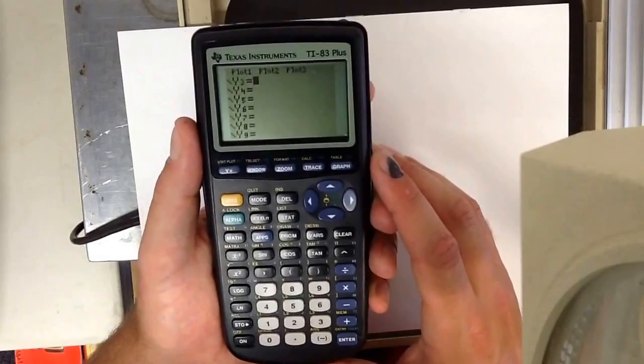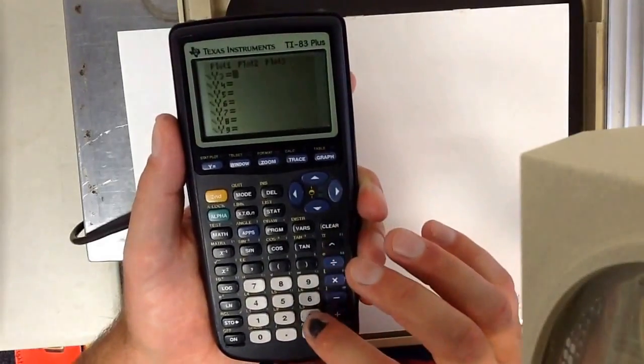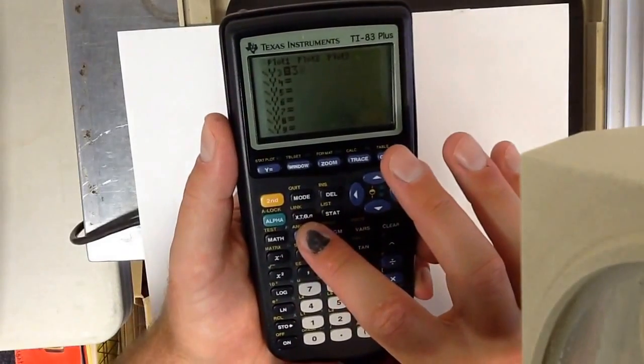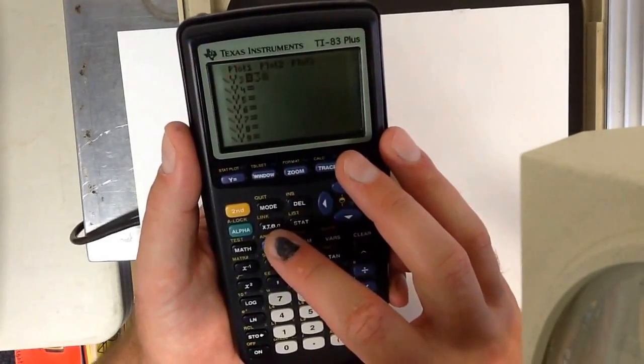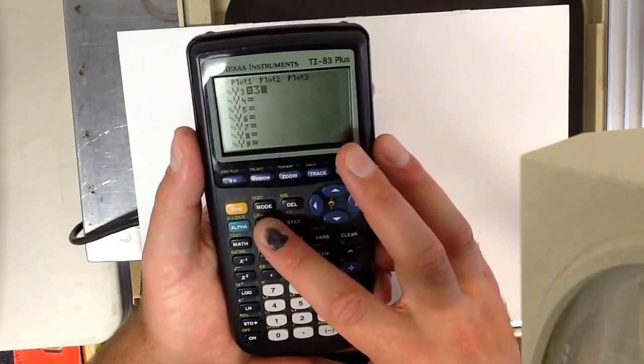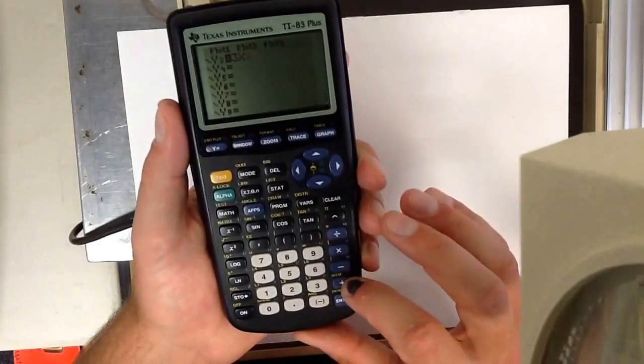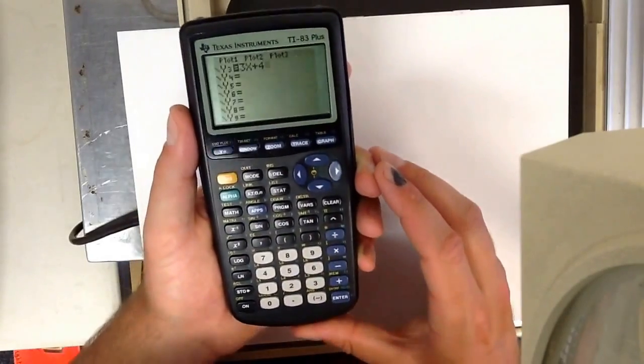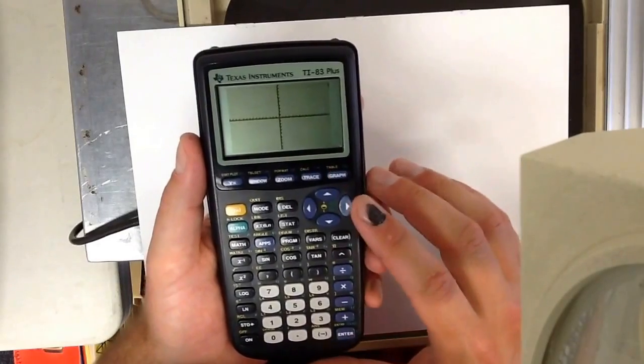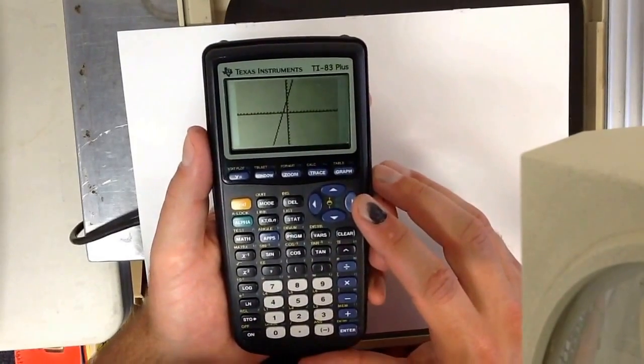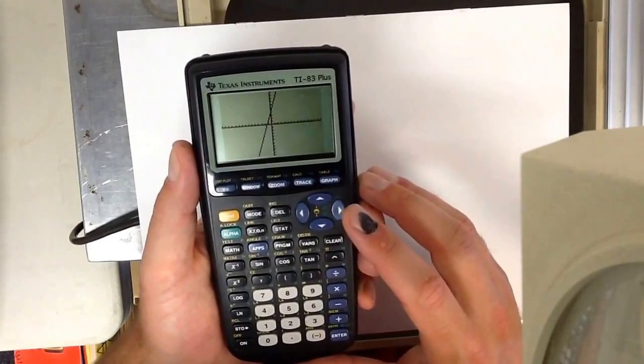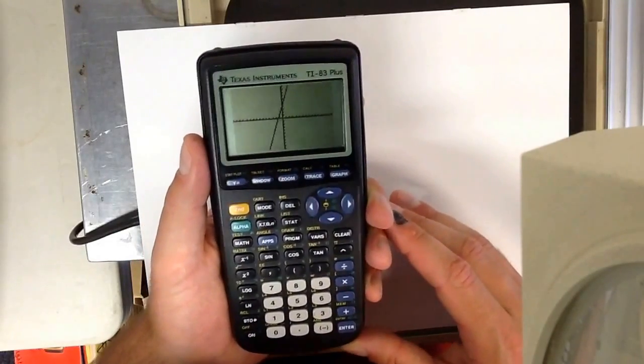Now let's say I wanted to graph y equals 3x plus 4. So I would say 3. Now this button right here, this x comma t comma theta comma n, that is your independent variable and it will always show up as an x. What did I say? Plus 4? No problem there. I've loaded it in. And now in order to see the graph I press graph. You see the Cartesian coordinates and then you see the line being populated on the screen as the program runs through.